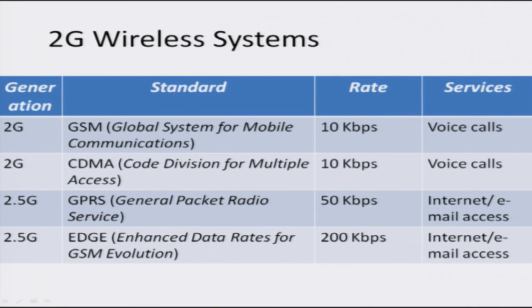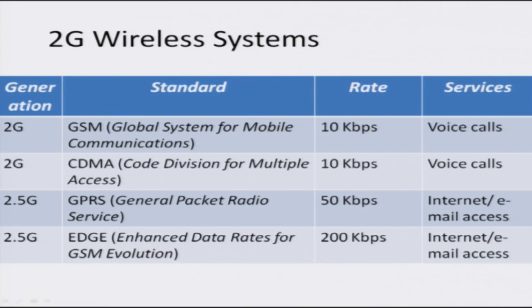These standards support voice calls, and as you might already know, the larger the data rate, the richer the services that you can support in a wireless communication system. For instance, the later 2.5G generation — GPRS, that is General Packet Radio Service, and EDGE, which is Enhanced Data Rates for GSM Evolution — support about 50 to 200 kilobits per second and allow not only voice calls but also access to internet, email, and other features.